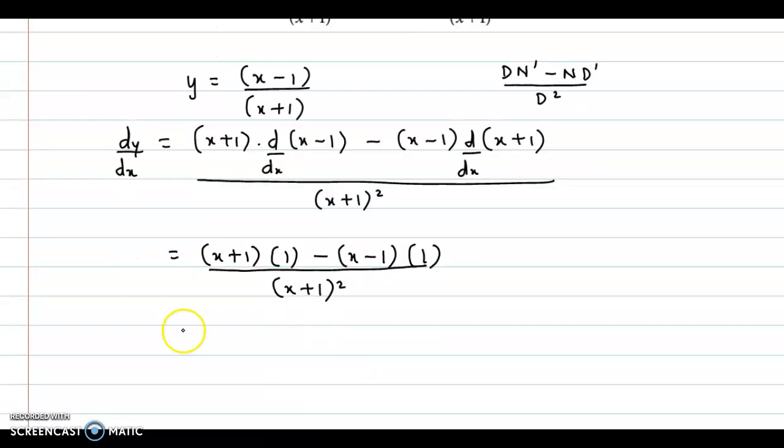Now simplifying the numerator, we get 1 into x plus 1, this will be x plus 1 and here the sign will change, so this will be minus x and this becomes plus 1 divided by x plus 1 the whole square.